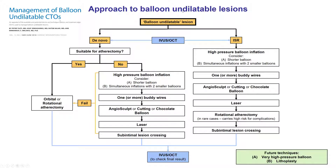This is an approach to balloon-undilatable lesions. It depends on whether they are de novo or within a stent — the main difference being that atherectomy is much better for de novo lesions and rotational atherectomy can only be done as a last resort for in-stent restenotic lesions. In this case, the first question is whether the lesion is suitable for atherectomy. If so, we typically proceed with orbital or rotational atherectomy. If it fails or is not suitable, we try high-pressure balloon inflations using buddy wires, angiosculpt or other scoring balloons, laser, and sub-intimal lesion crossing, crossing over to atherectomy if any of those strategies fail.